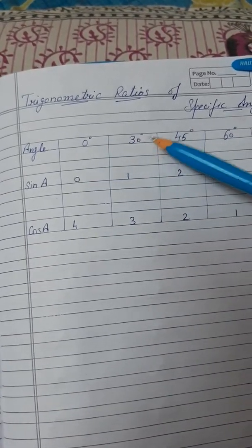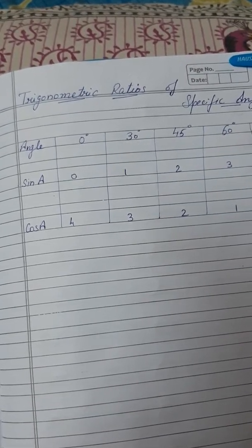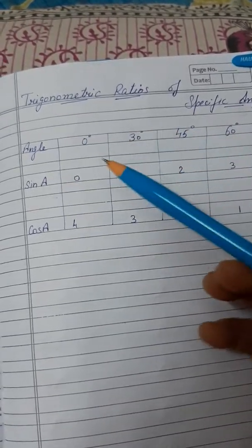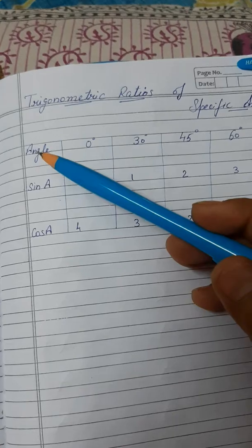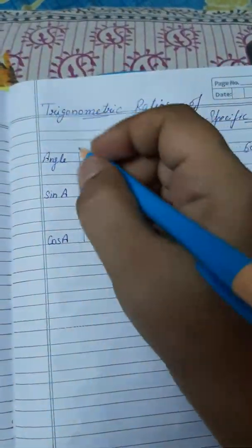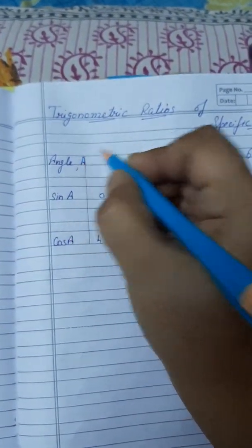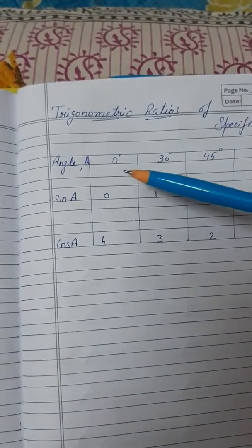First is 0 degree, 30 degree, 45, 60 degree and 90 degree. First of all we will make up the chart. Here we have angle, suppose angle A. One angle A, 0 degree.